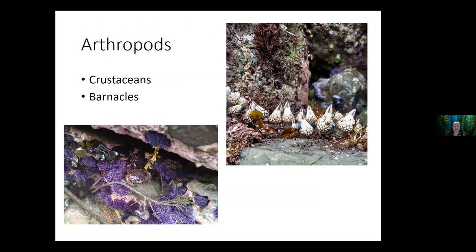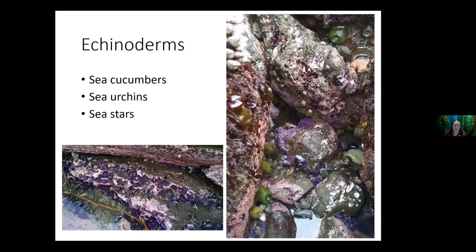Another type of organism found in the intertidal are arthropods — things like crustaceans and barnacles. You can see a purple shore crab hiding among purple urchins in the bottom left picture. Barnacles use a glue-like substance to hold themselves to rock that has super high tensile strength that researchers are studying hoping to replicate it. Echinoderms — meaning 'spiny-skinned organisms' — are also common in the intertidal: things like sea cucumbers, sea urchins, and sea stars. You can see some of those in the pictures here.